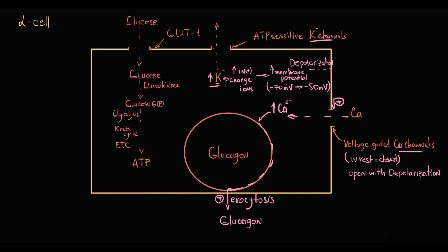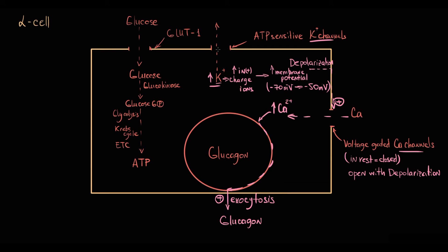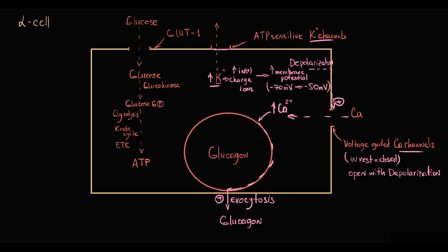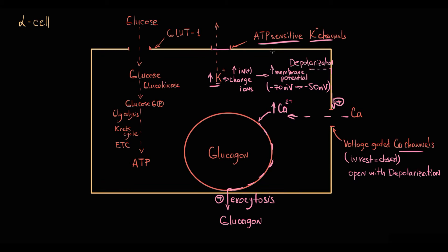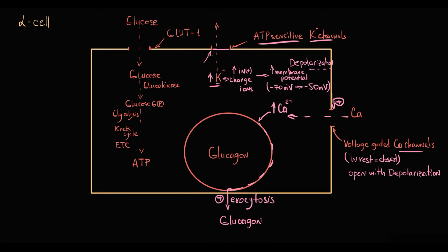To secrete glucagon, potassium level inside the cell has to increase, meaning these potassium channels have to be closed. These potassium channels are called ATP-sensitive because changes in ATP level inside the cell determine their functional state. With decreasing ATP, potassium channels close. With increasing ATP, potassium channels open.